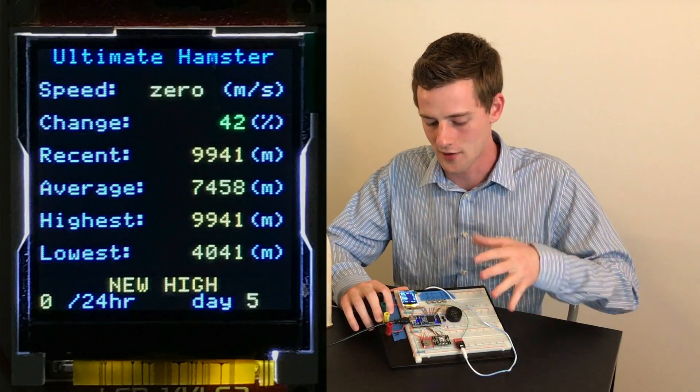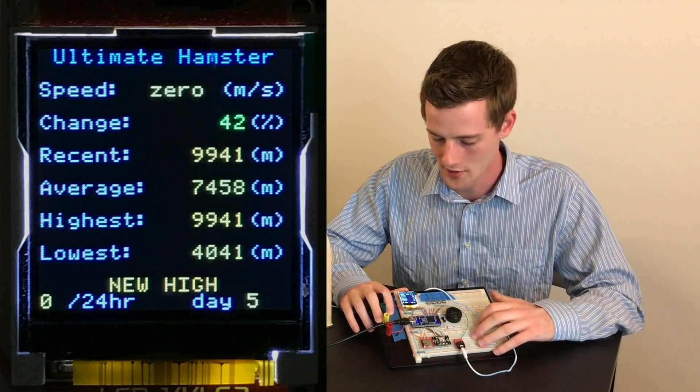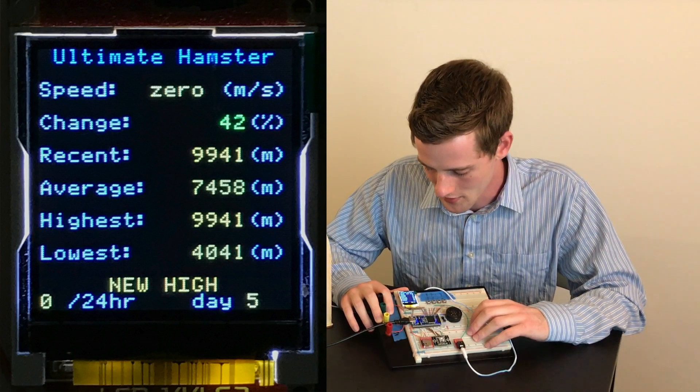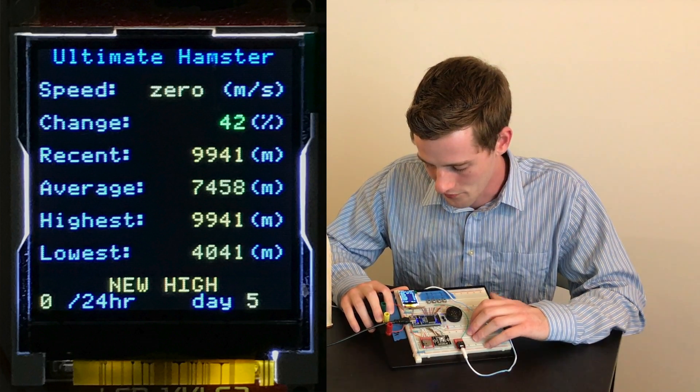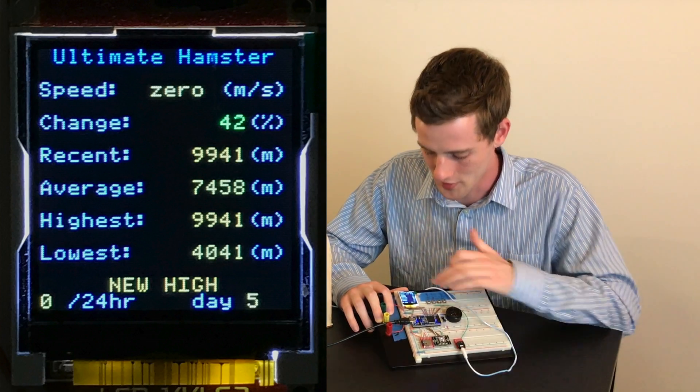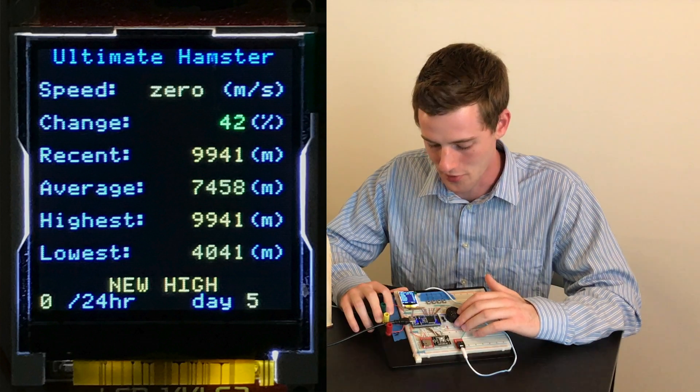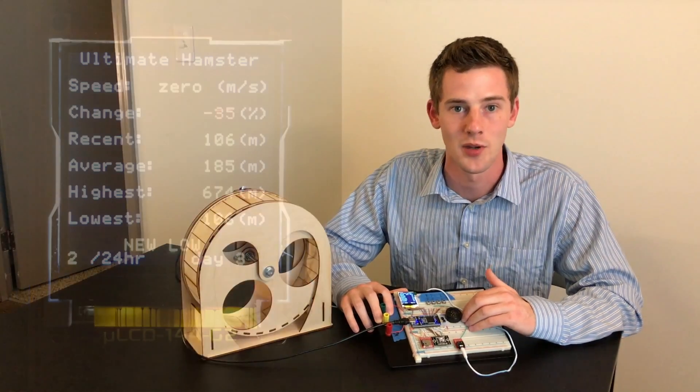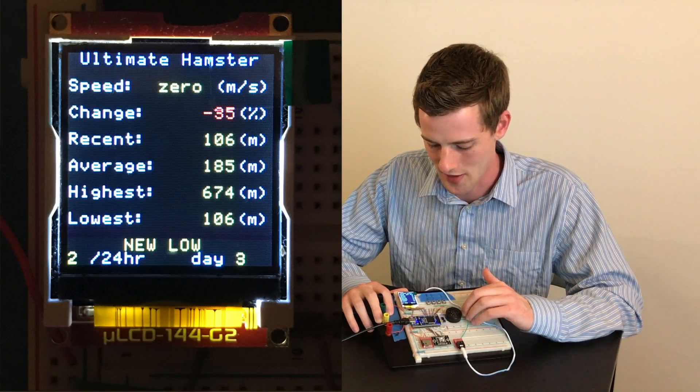This is added together in a five day running average, which is displayed under average. And the percentage change from recent to the average value will be displayed either in red or green depending on if it's been an increase or decrease on the average.